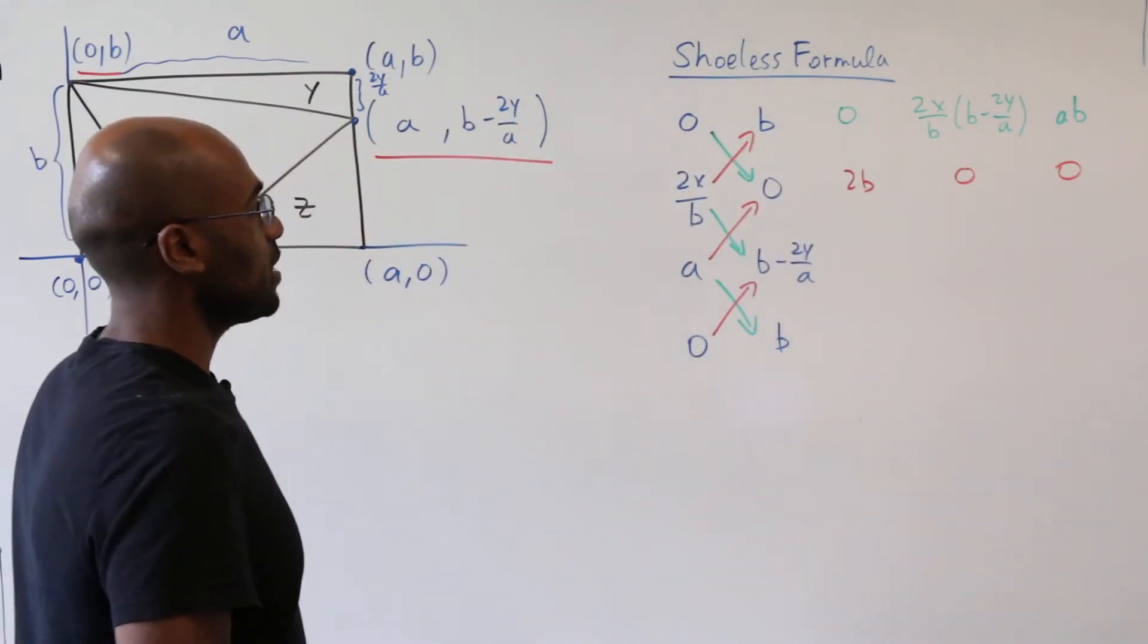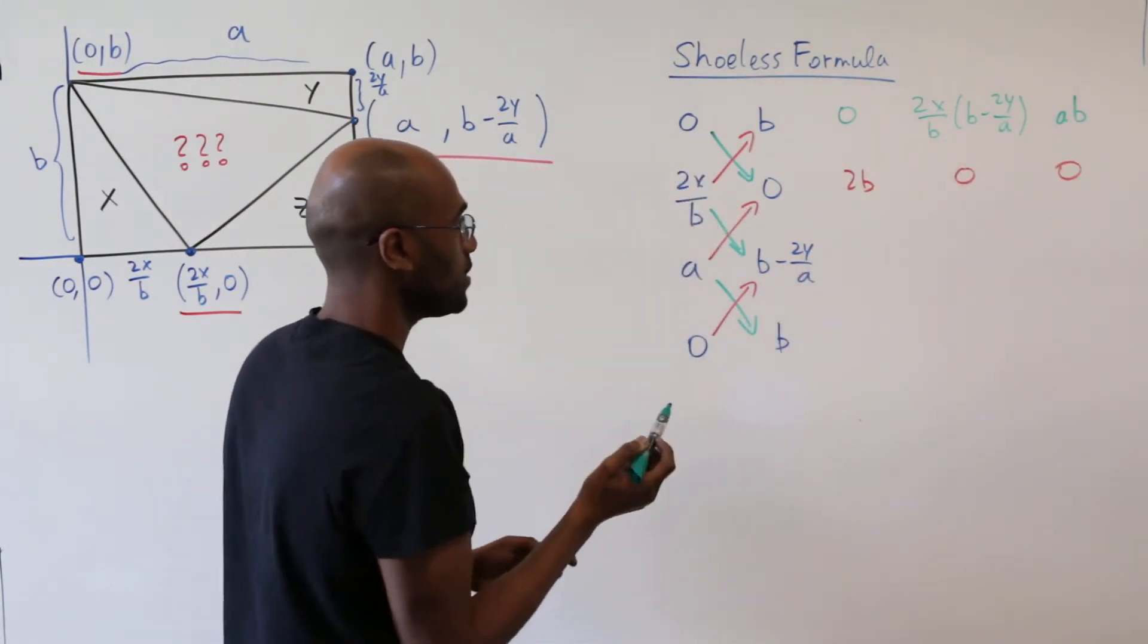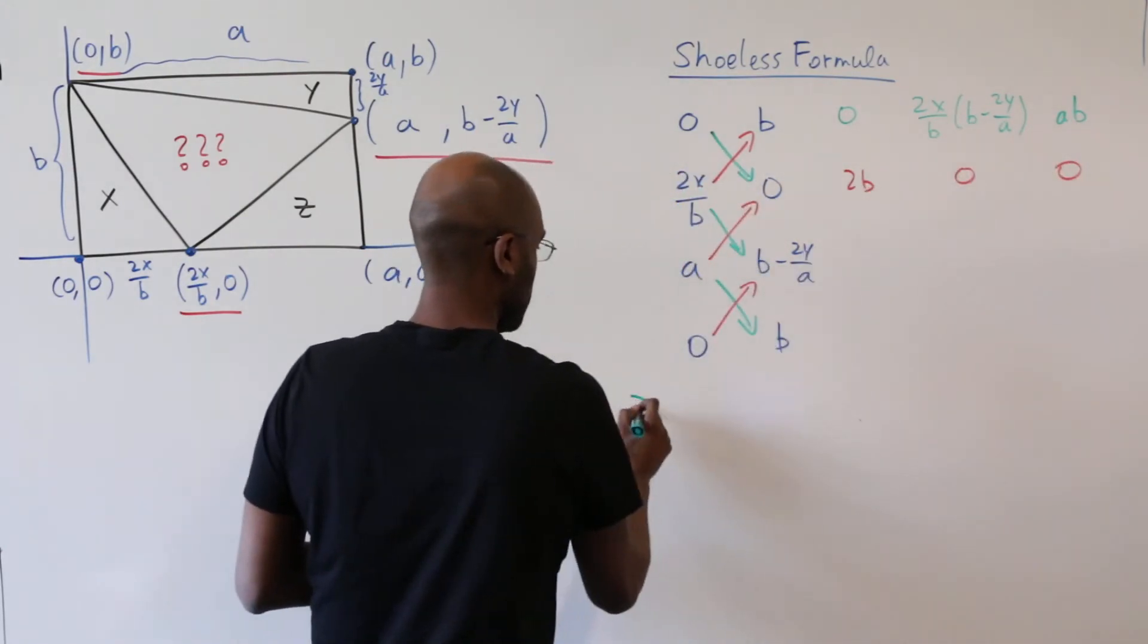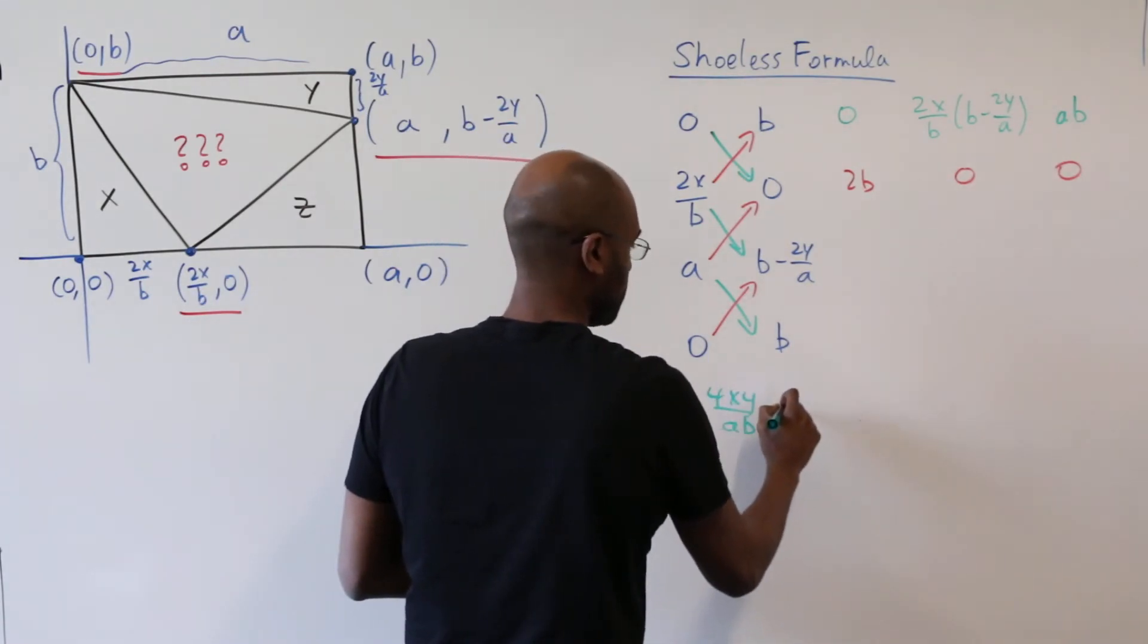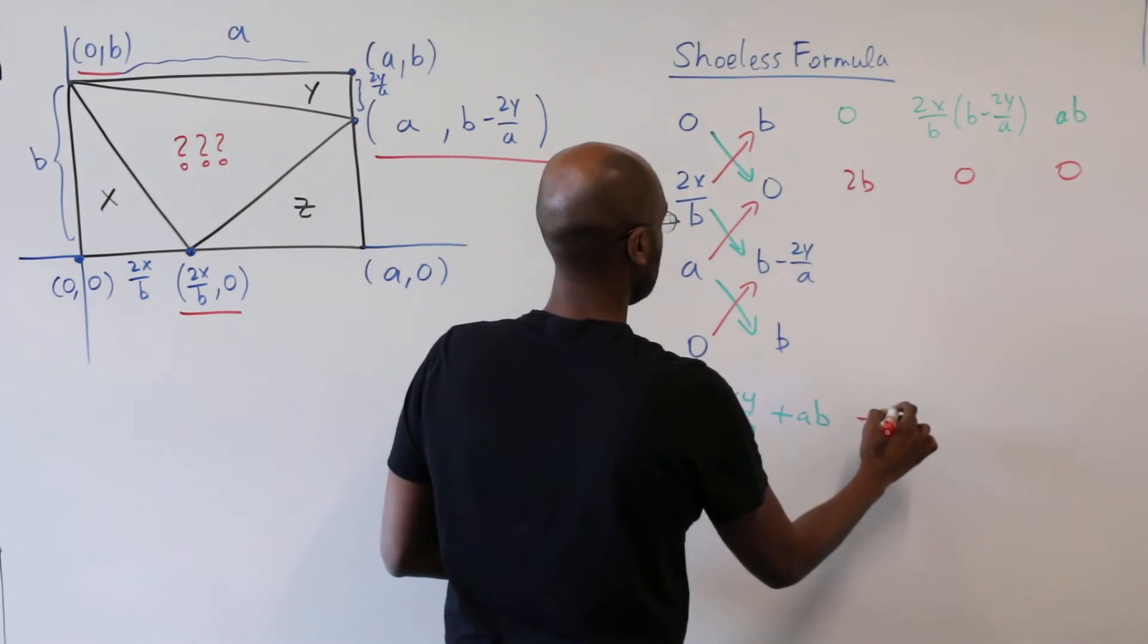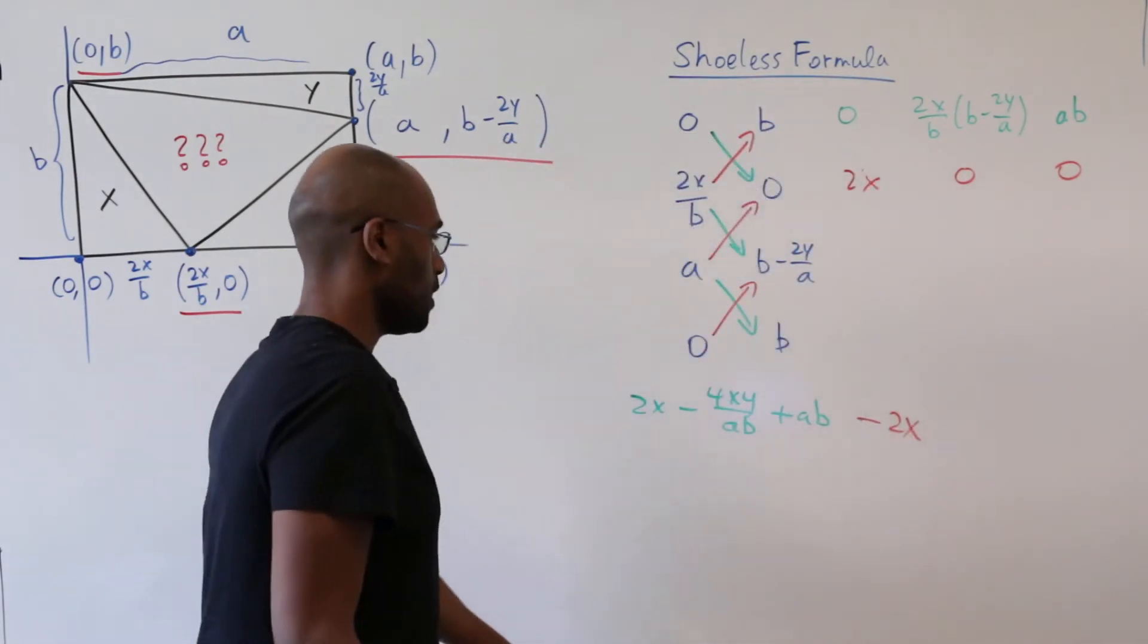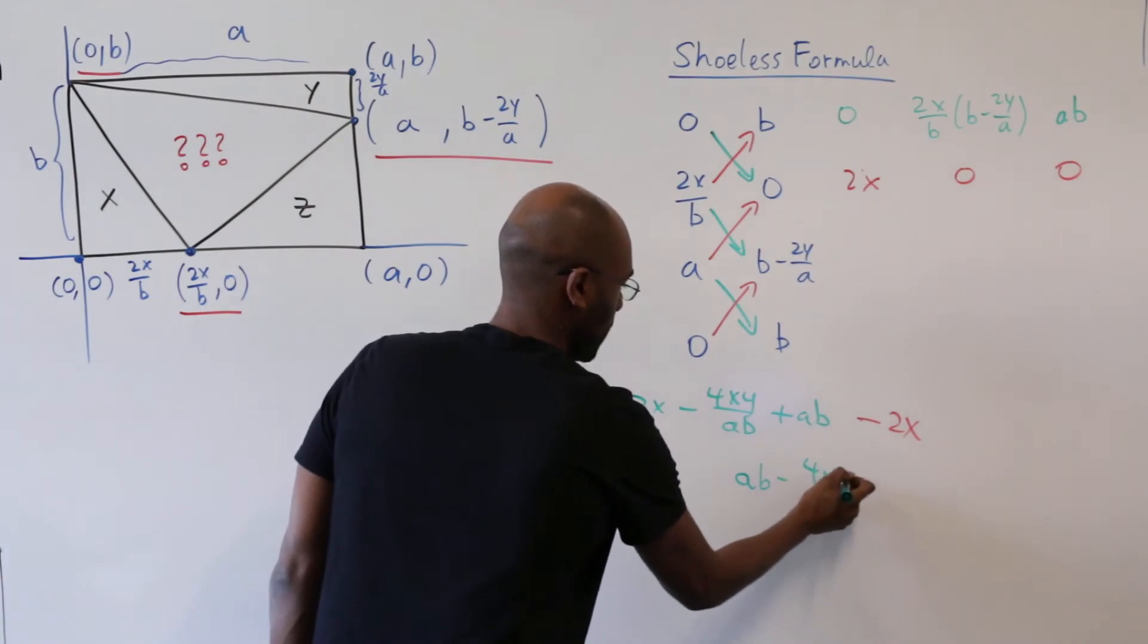So what the shoelace formula states is that the area of a triangle is the sum of the values in the green laces minus the sum of the values of the red ones. So in this case we'll add up everything in green. If we distribute here we'll get 2x minus 4xy over ab plus ab and then we'll subtract everything in red which is 2x over b times b so this is 2x. Okay so if we simplify that we get that the area is ab minus 4xy over ab.